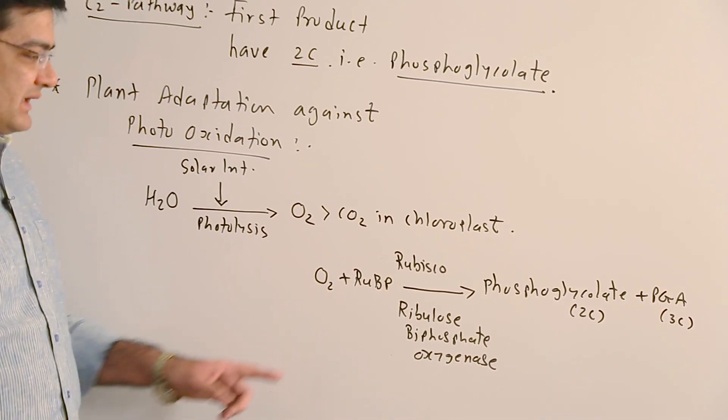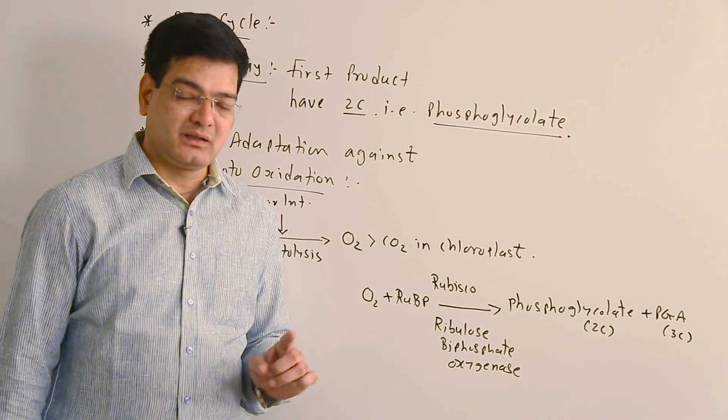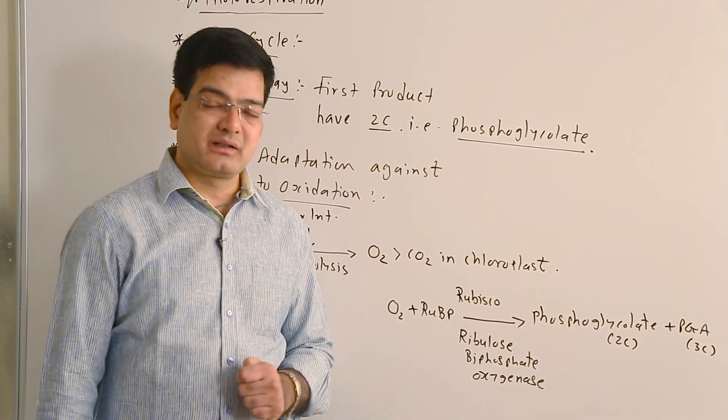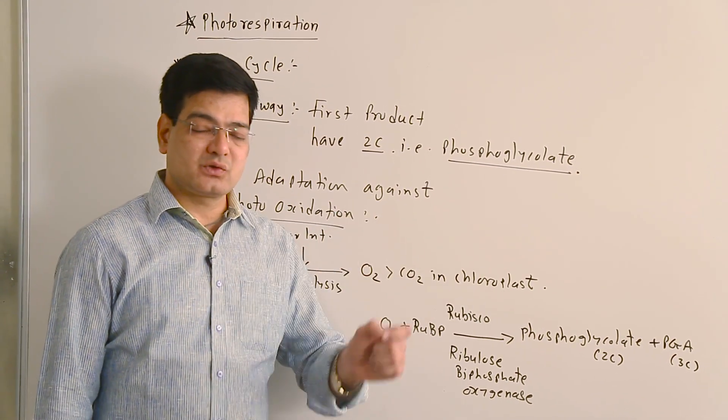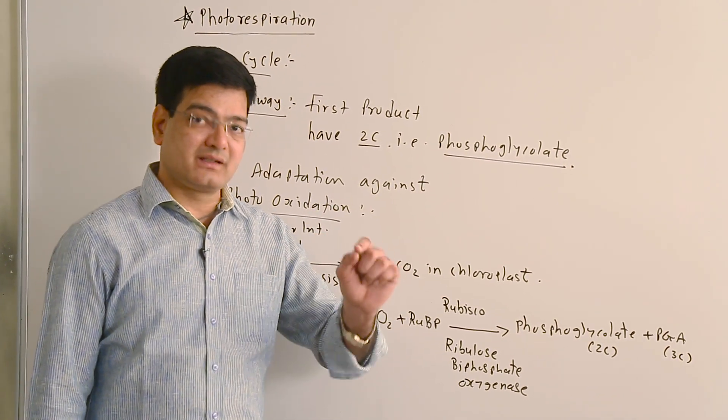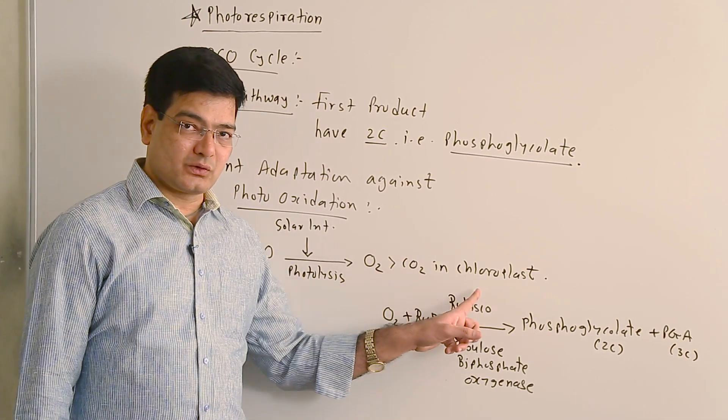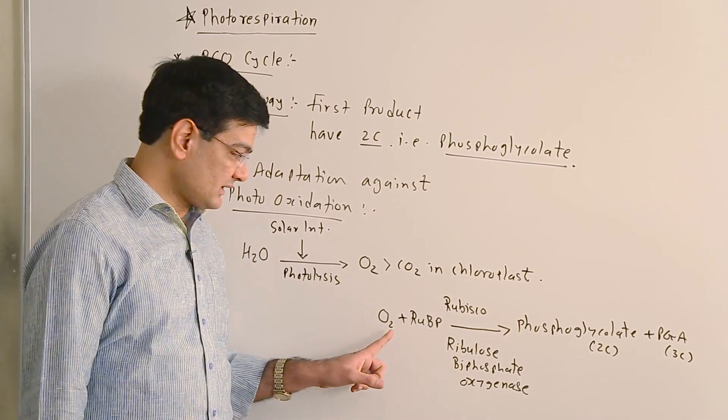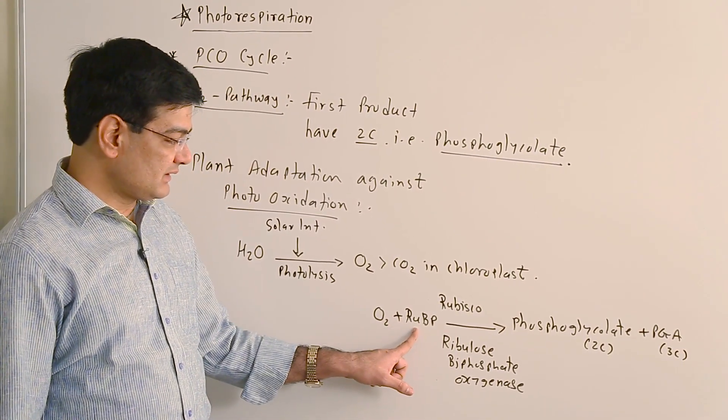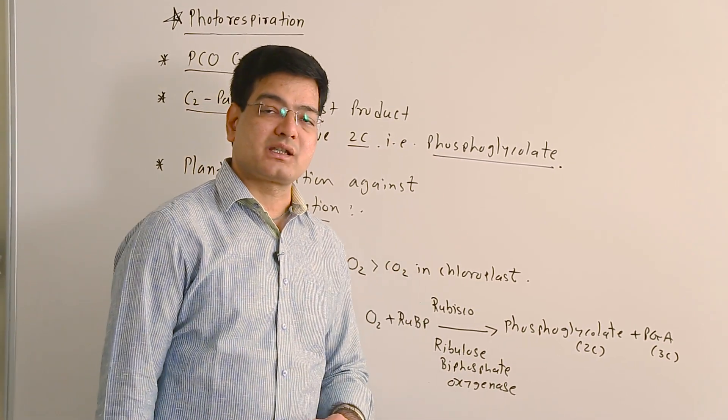This Rubisco has the ability to bind carbon dioxide with RuBP in the Calvin cycle of the dark reaction of photosynthesis, and Rubisco is called ribulose bisphosphate carboxylase in that reaction. But if oxygen is more than carbon dioxide in the chloroplasts, Rubisco acts as an oxygenase and induces oxygen reaction with RuBP to form phosphoglycolate, and that is photorespiration.